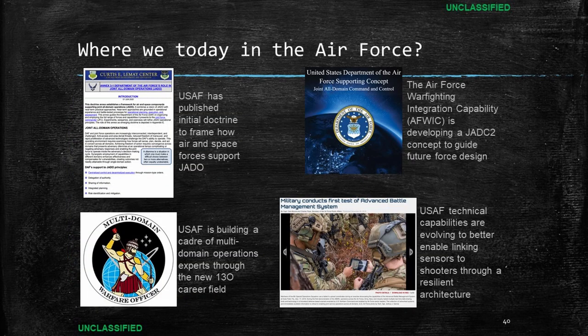So where are we today? Across the joint force, there is some uncertainty on where we're all headed. The Army published TRADOC Manual 525-3-1 entitled The U.S. Army in Multi-Domain Operations 2028. The Marine Corps has Force Design 2030, and the Navy has A Design for Maintaining Maritime Superiority 2.0. The Joint Staff has put out a few classified documents in draft, to include the Joint Concept for Command and Control and the Joint Warfighting Concept. Together, these documents begin to paint a picture of our future force. The DAF Role in JADO Doctrine Publication, along with the AFWIC JADO and JADC2 concepts, supported by technological development and education, represent the Air Force's current trajectory in contribution to the larger DoD discussion.